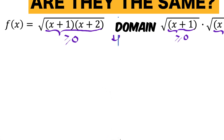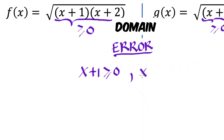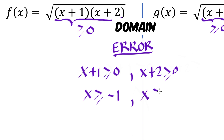Let me show you a common mistake here. A common error is: since the value under the radical must be greater than or equal to 0, many students would say x+1 ≥ 0 and x+2 ≥ 0, and so x ≥ -1 and x ≥ -2 for the first function. This process is wrong for finding the domain of f.